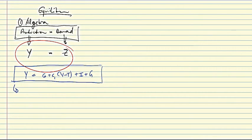You multiply this out and bring the c1 y term to the left. That is, and then factor it out, one minus c1 y equal to c0 minus c1 t plus i plus g. And that can be solved out by dividing through by one over one minus c1 times what we already have on the right-hand side here, plus i plus g.